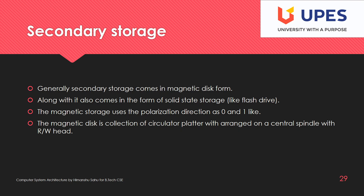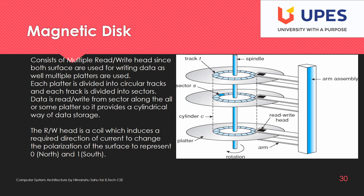Apart from magnetic storage, we have solid-state storage — nothing but a pen drive with larger capacity. The magnetic disk is a collection of circular platters arranged on a central spindle with read/write heads. This diagram is taken from the operating system book by Galvin, showing an example of a magnetic disk.